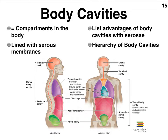So what are these body cavities called? Let's start with the lateral view. We see two major body cavities. On the dorsal side in orange, we see the dorsal body cavity, which has two smaller cavities within it — the cranial cavity, which holds the brain, and the vertebral cavity, which we sometimes call the spinal cavity, which holds the spinal cord.